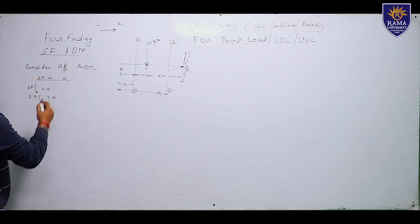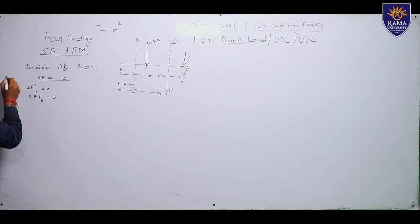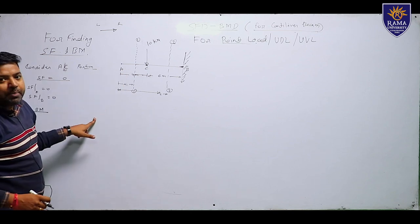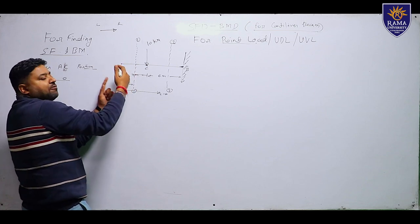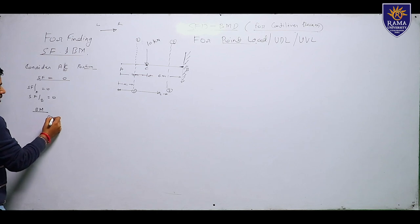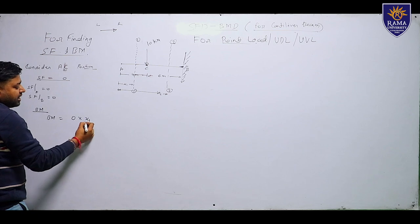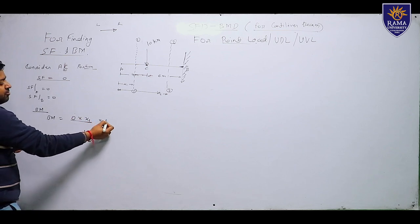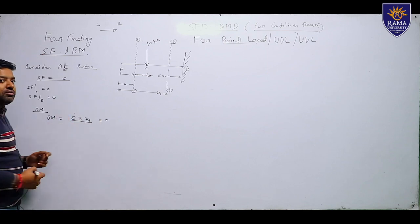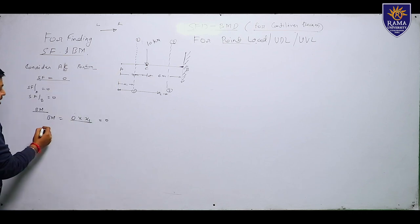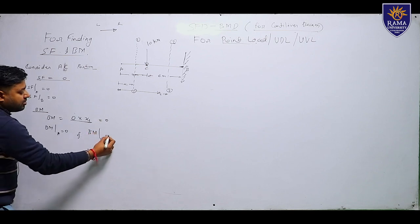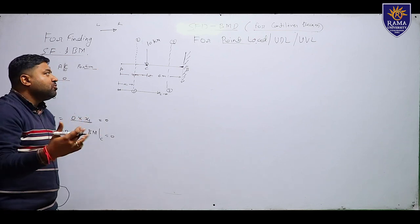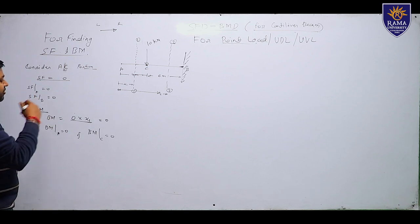Now for bending moment in the AC portion: if there is no force to the left of section 1-1, there is no moment. The bending moment equals force multiplied by perpendicular distance x1, but since force is zero, the result is zero. Therefore, bending moment at A equals zero and bending moment at C also equals zero.